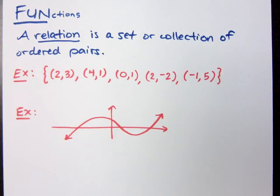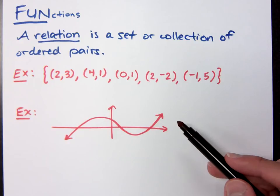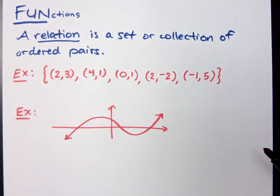That graph right there is itself a collection of ordered pairs. It has an infinite number of ordered pairs, so I'm not able to list them individually. Are you guys okay with what it is to be a relation? It's just a group, a collection, a set of ordered pairs.